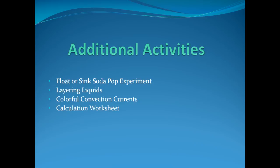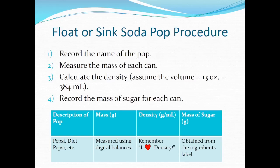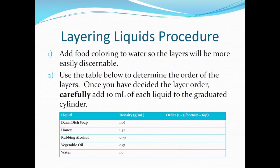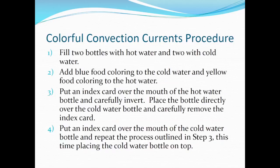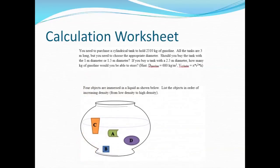For more practice with these concepts, you can complete the following additional activities. Through the float or sink soda pop experiment, you will investigate how the addition of solvents, such as sugar or salt, can affect a liquid's density. The layering liquids activity will demonstrate how liquids separate into layers based on their density. The key to getting the layers is to first decide what order the liquid should be added into the graduated cylinder. Through the colorful convection currents activity, you will explore the role that density plays in forming convection currents. You will use colored hot and cold water to observe the convection currents. You can also practice performing density calculations using these questions, which are also provided as a worksheet.